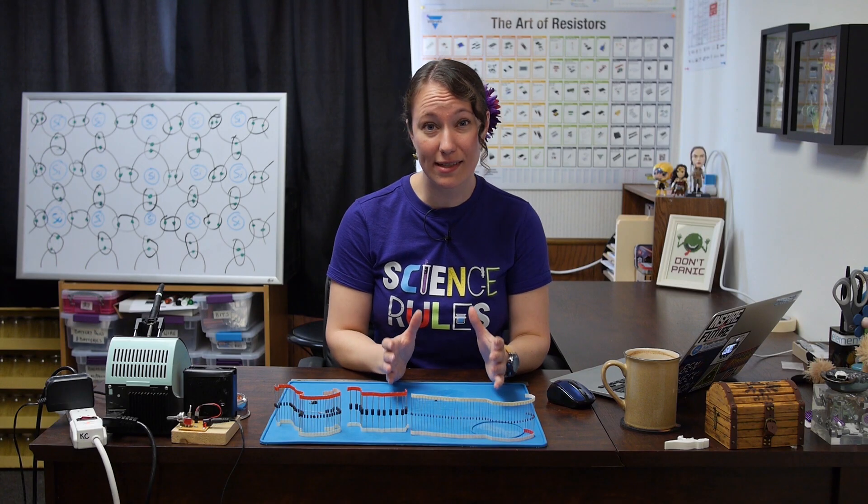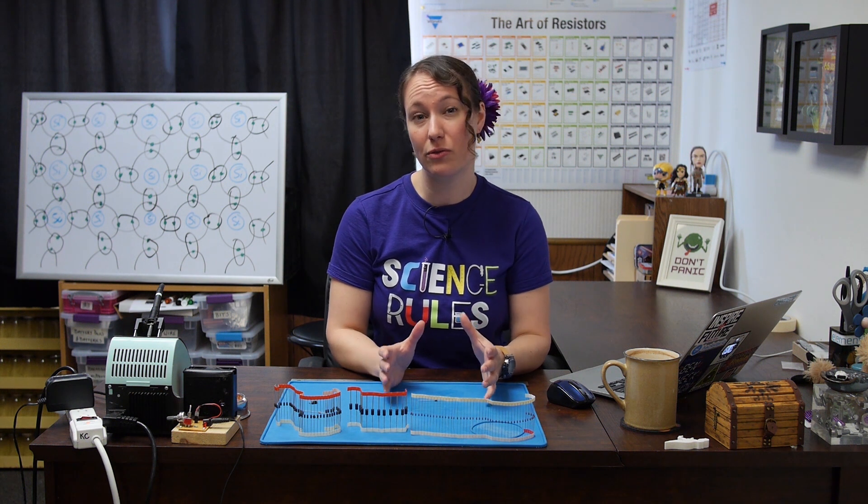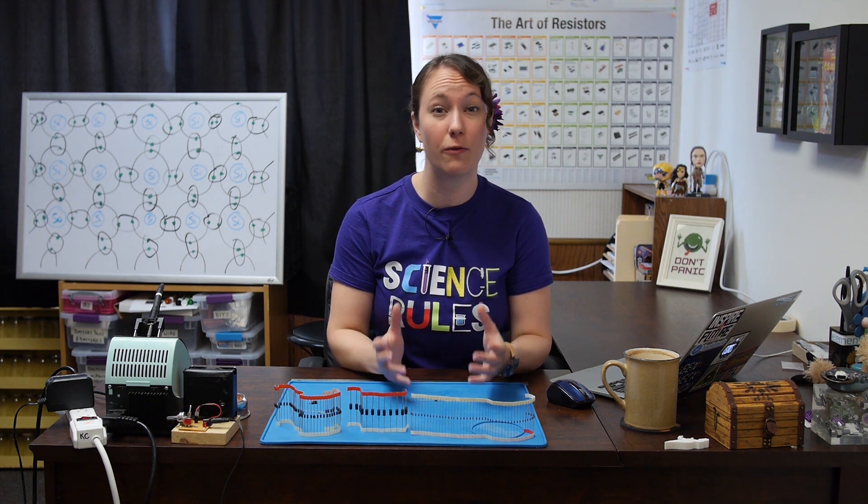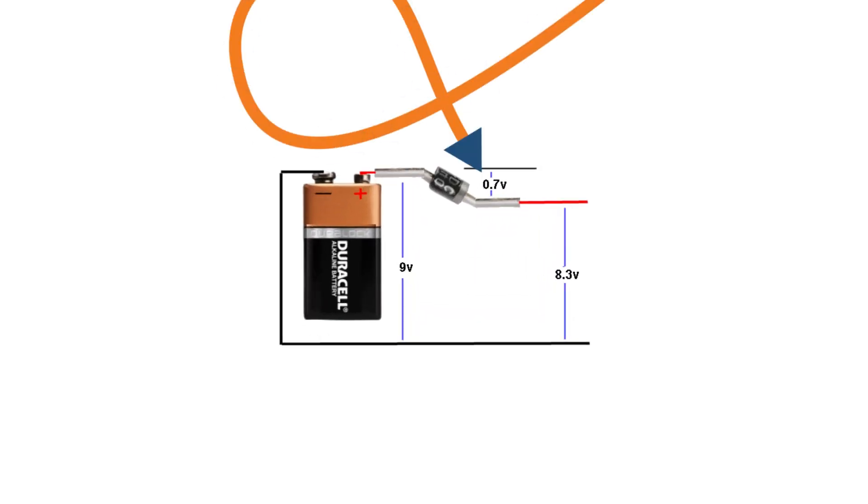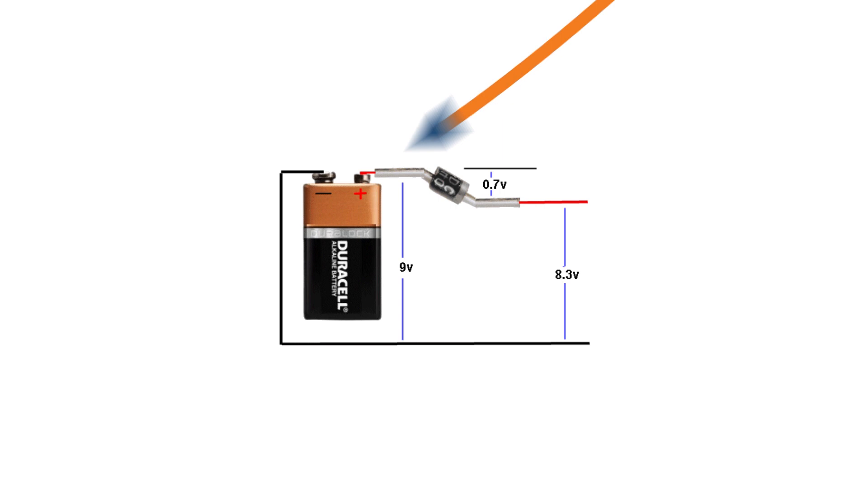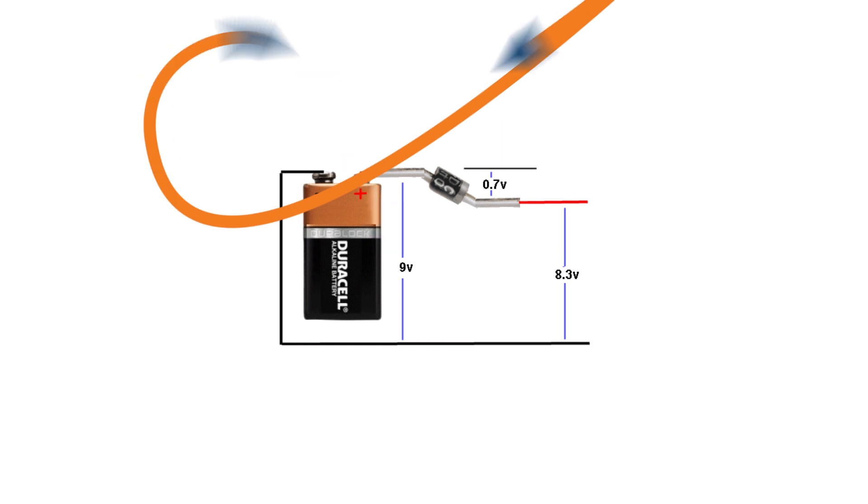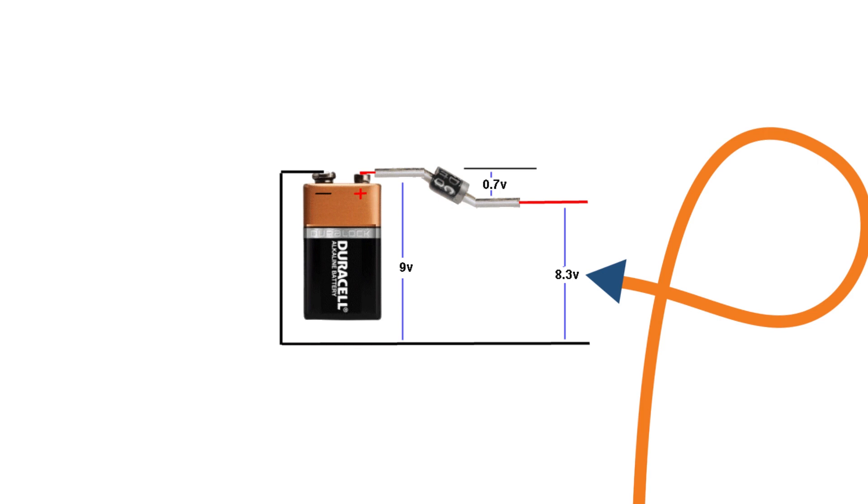Let's talk more about that 0.7 volts. The 0.7 volts required to overcome the depletion zone is also the forward voltage drop. In the circuit, 0.7 volts is lost to heat energy. If the diode was connected to 9 volts, then 0.7 volts would be lost, leaving 8.3 volts available to do whatever it is you're trying to do.